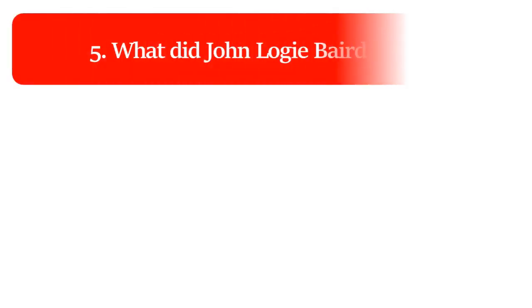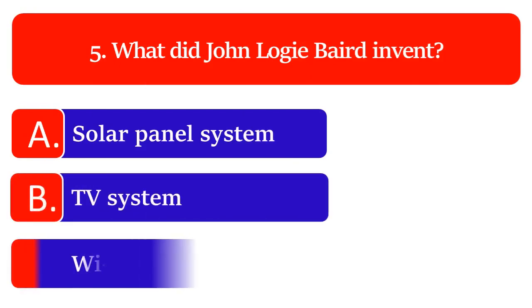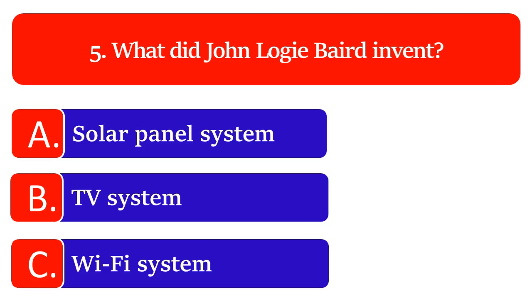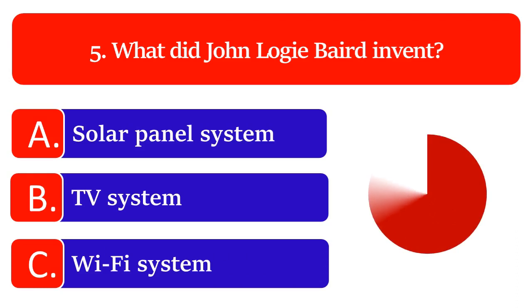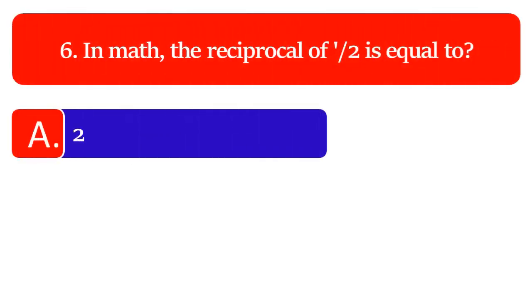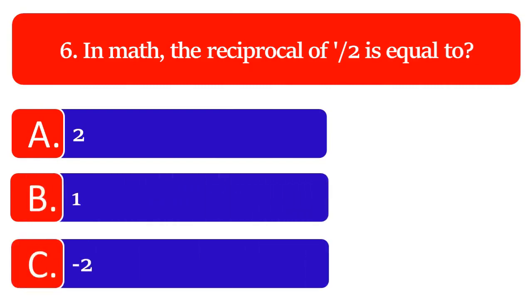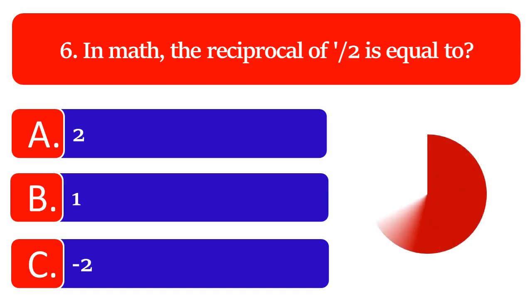What does John Logie-Baird invent: solar panel system, TV system or Wi-Fi system? The great answer is TV system. In math, the reciprocal of 1 by 2 is equal to: 2, 1 or minus 2? The great answer is 2.